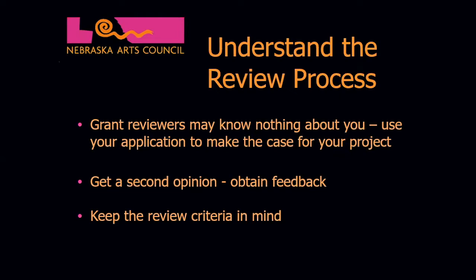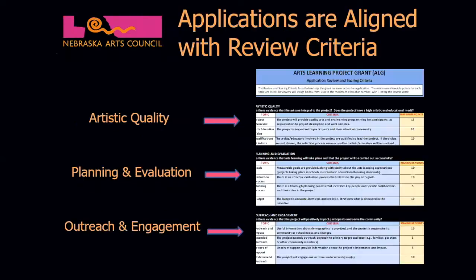Refer to the scoring and review rubric — this is what the panelists use when they are scoring your grant. Rubrics for each grant category are available on our website, and there is a link within each application as well. The rubric is divided into three key areas. The details vary from one grant category to another, but in general these are the main areas reviewers look for: artistic quality, planning and evaluation, and outreach and engagement.